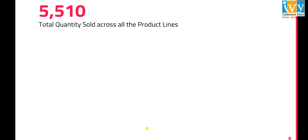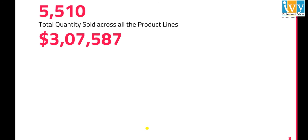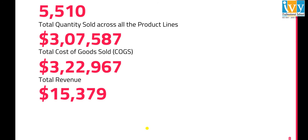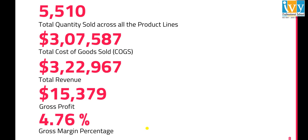Now let us see the business insights derived from the dataset. We have 5,510 total quantity sold across all product lines. $3,07,587 is the total cost of goods sold. $3,22,967 is our total revenue. $15,379 is our gross profit, and 4.76% is our gross margin percentage.